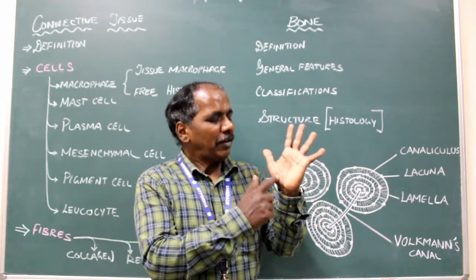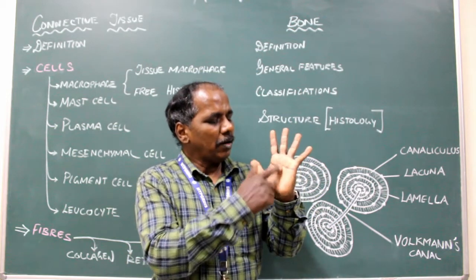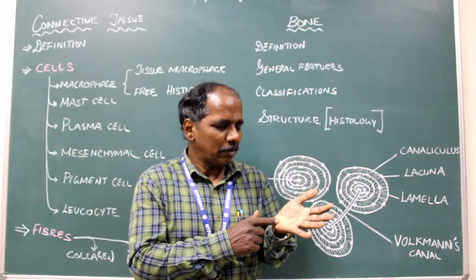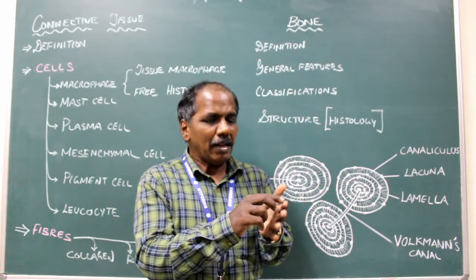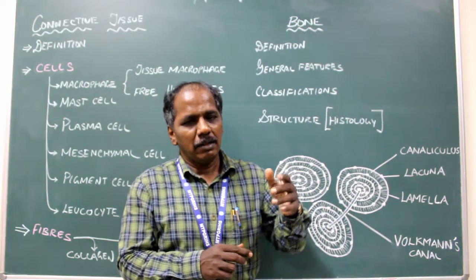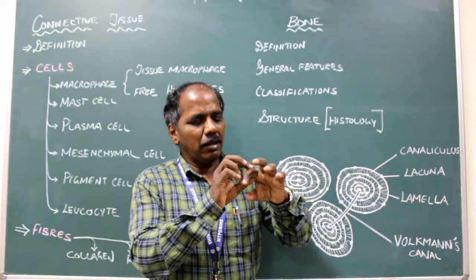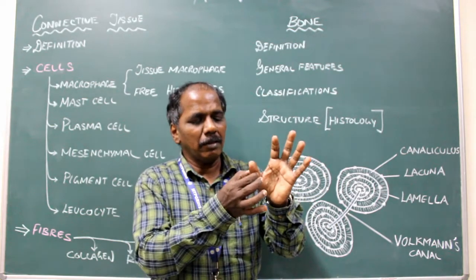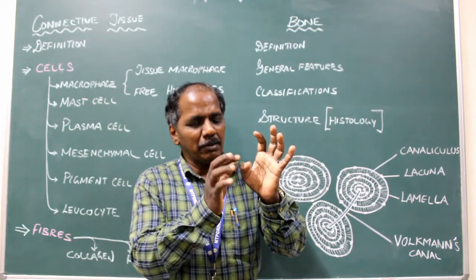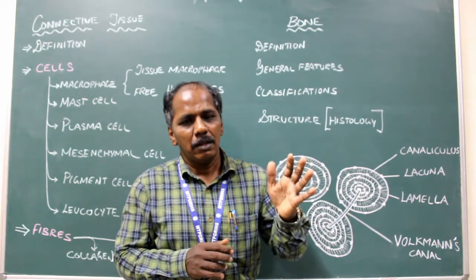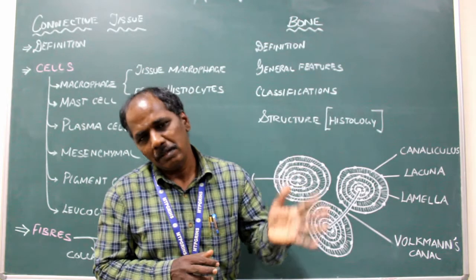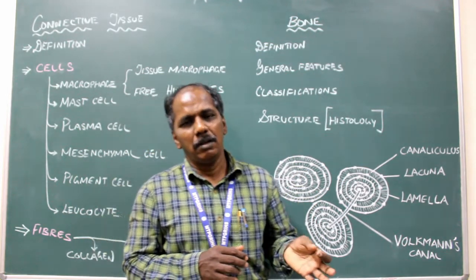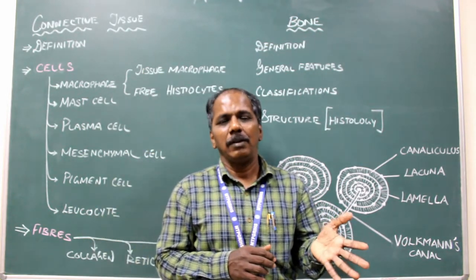There are five metacarpal bones, and the phalanges. There are three phalanges in each finger except for the thumb, which contains only two. So totally fourteen phalanges. These are the bones of the upper limb.